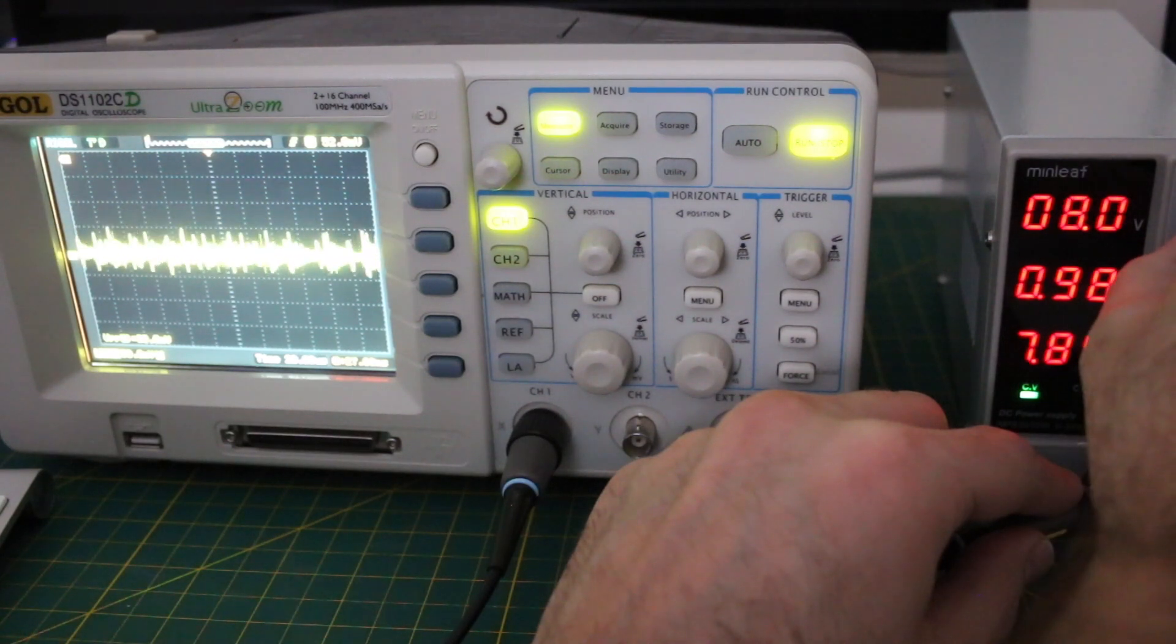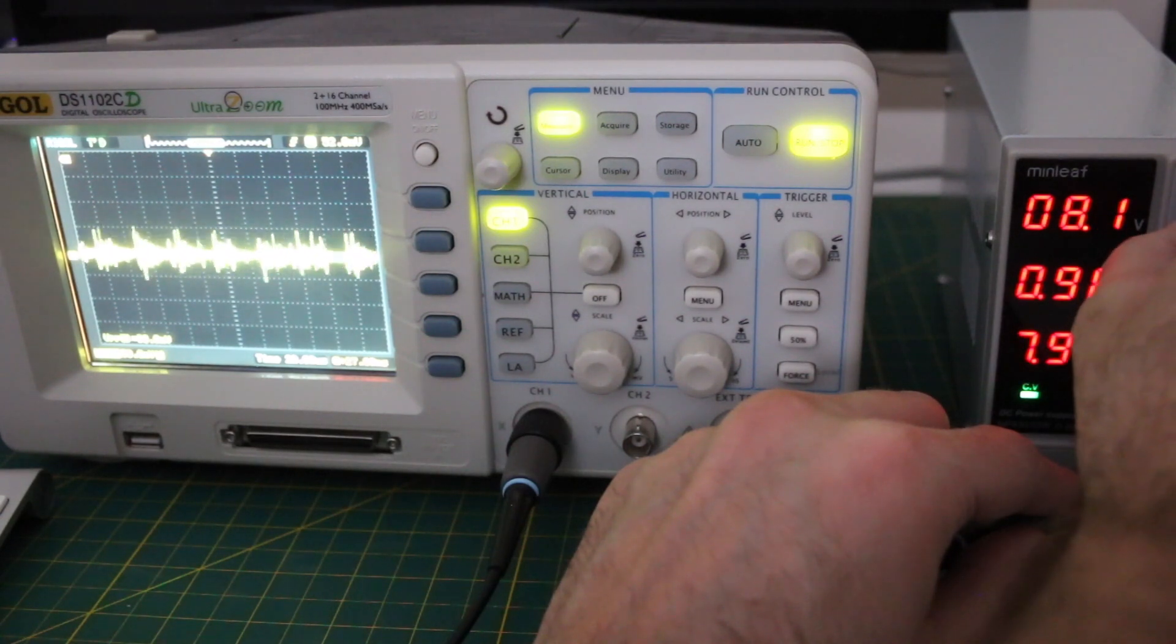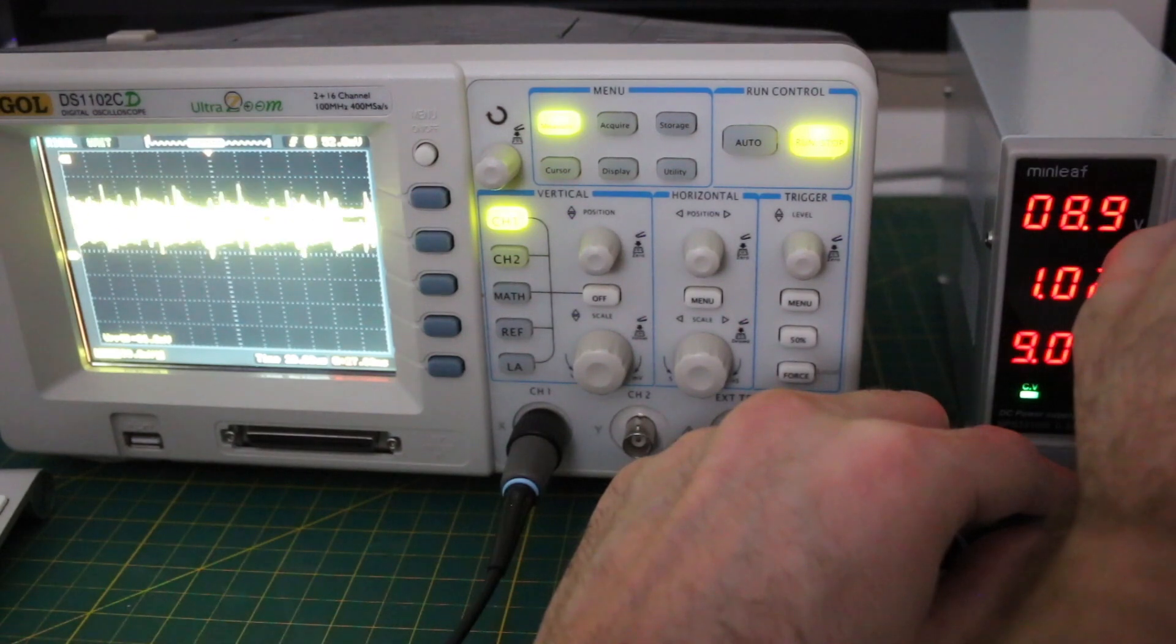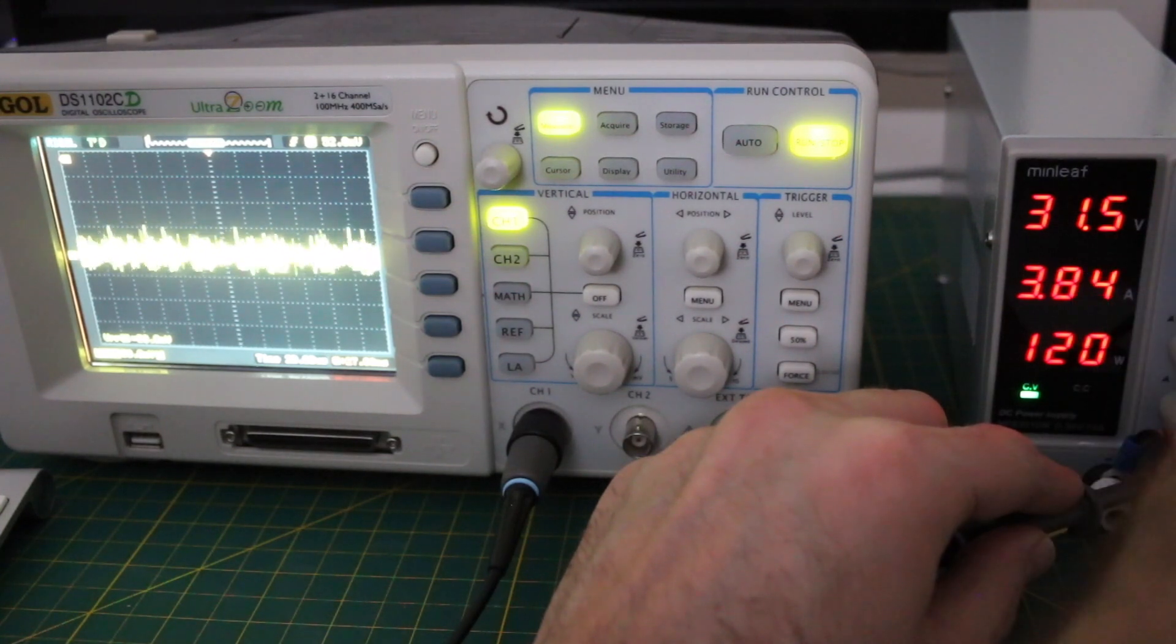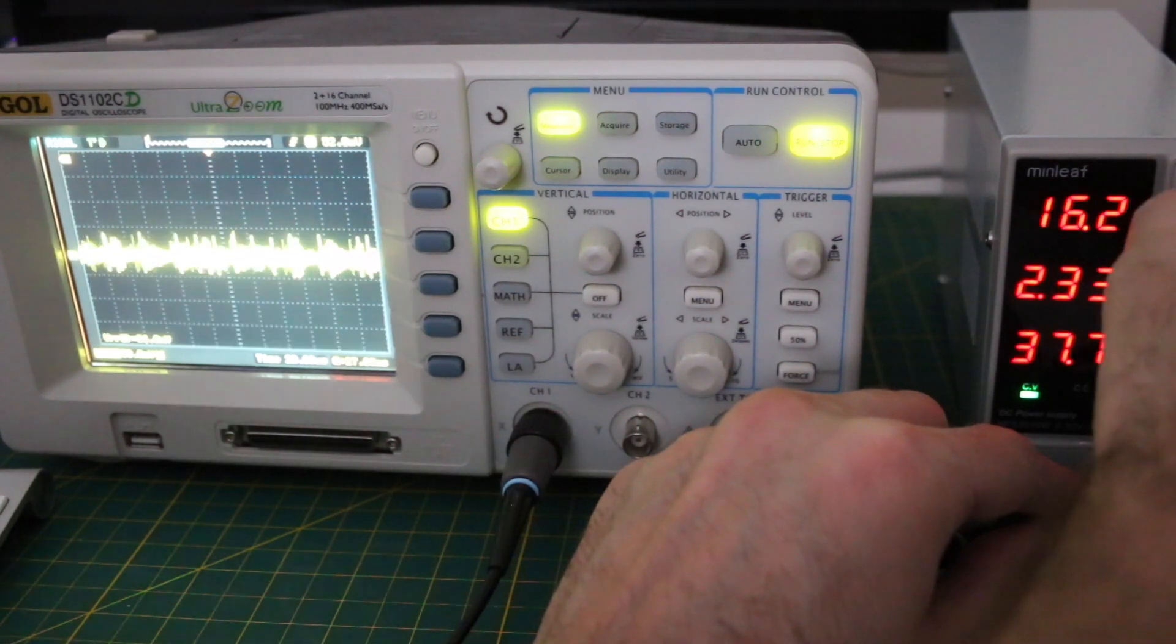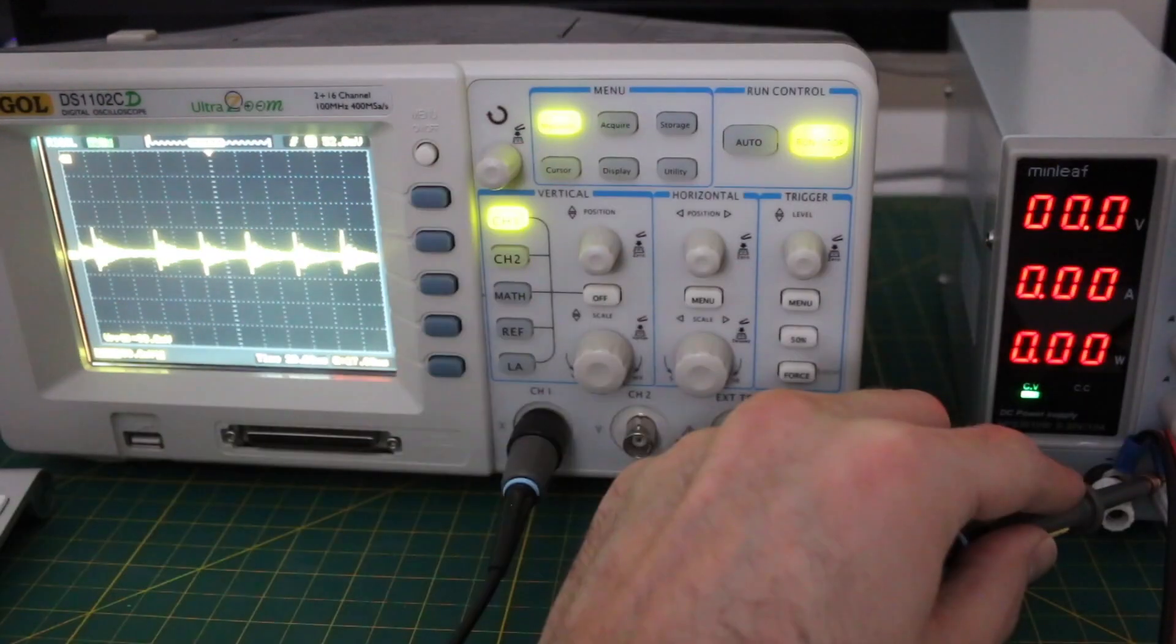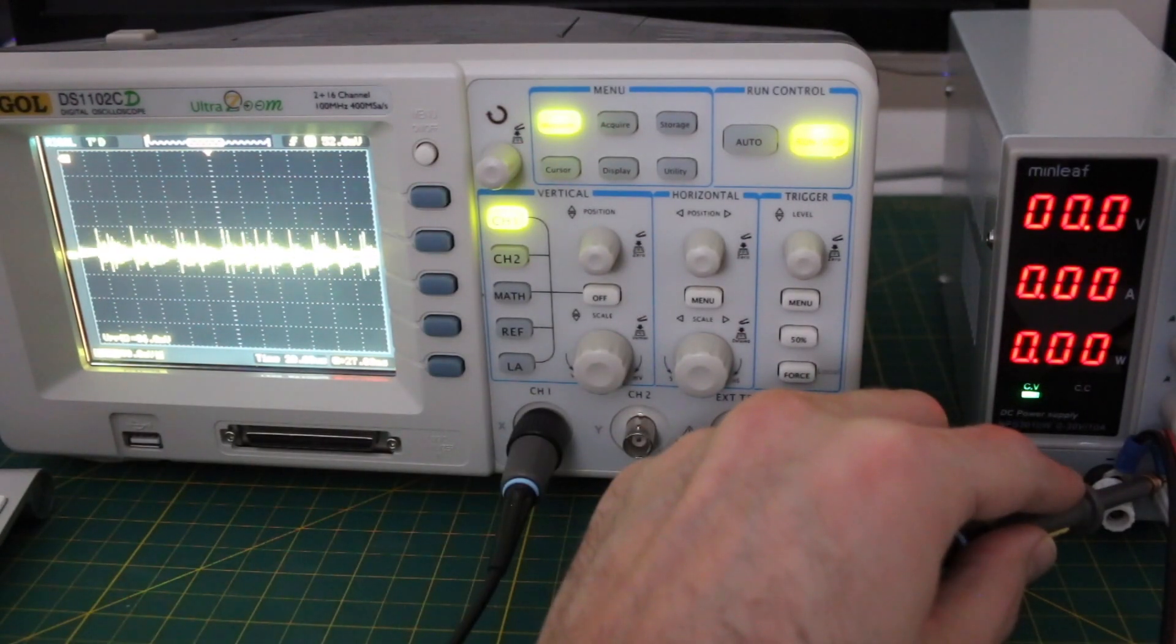At 8 volts and 0.98 or 97 amps, I'm getting around 85 to 100 millivolts ripple and noise. If I go all the way up, 3.8 amps, 31 and a half volts, still 86, 90 something millivolts peak to peak. As I turn it back down with no load again, we're back to around 85 to 90 millivolts peak to peak.